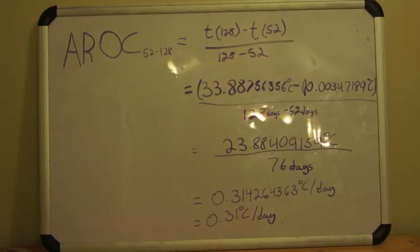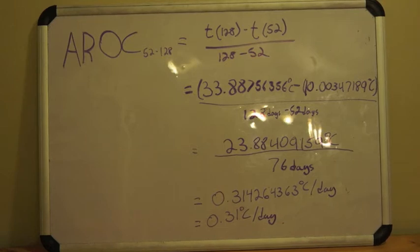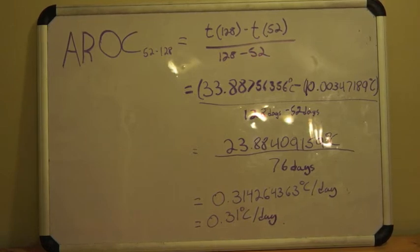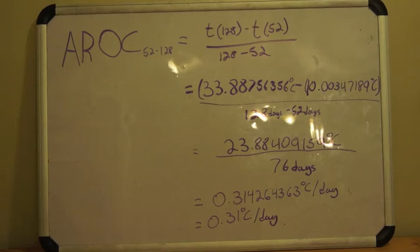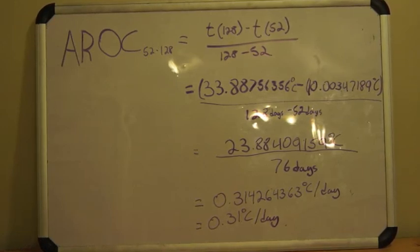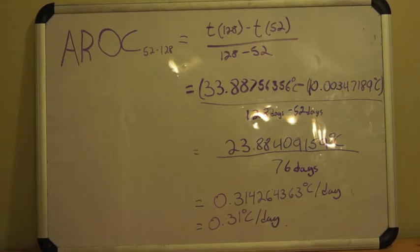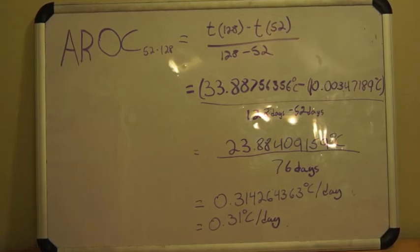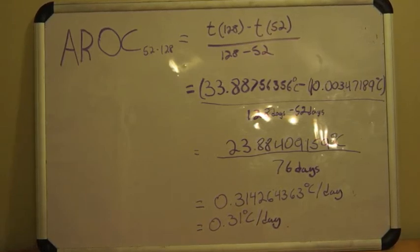Now that we have our y values, we can solve for AROC. Substitute your full values and evaluate using your calculator. Don't forget the units in your calculation. Your final answer for AROC should be 0.31 degrees Celsius per day.